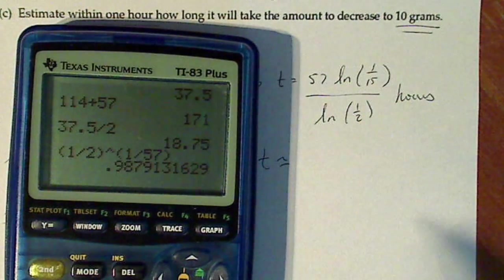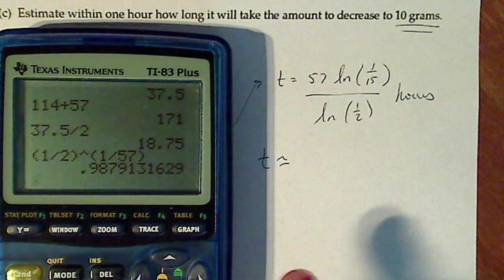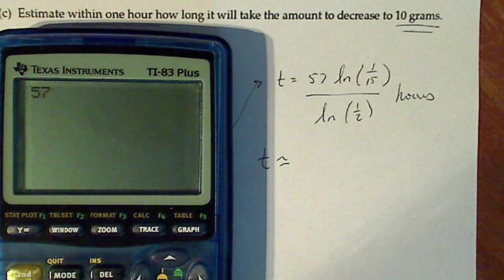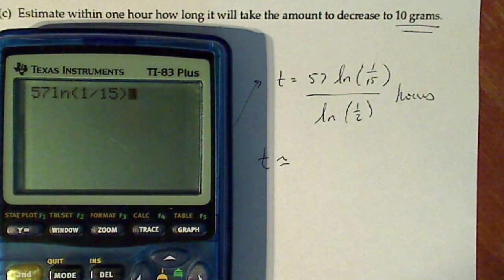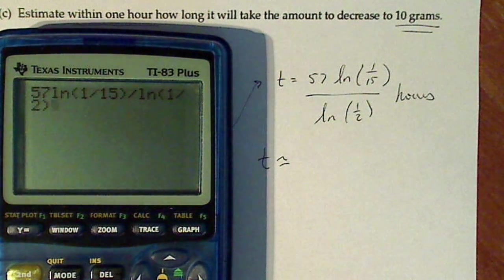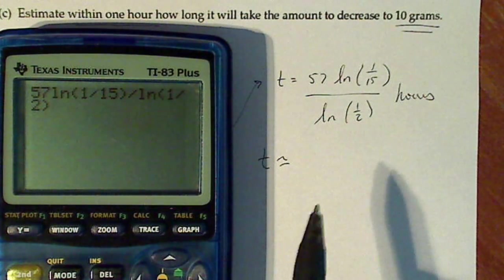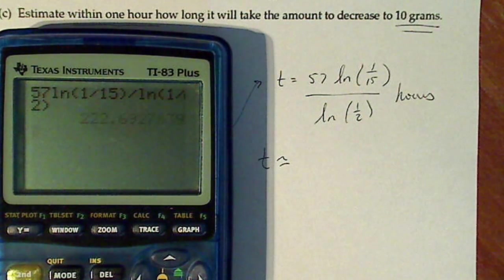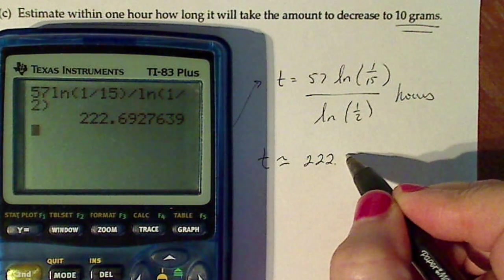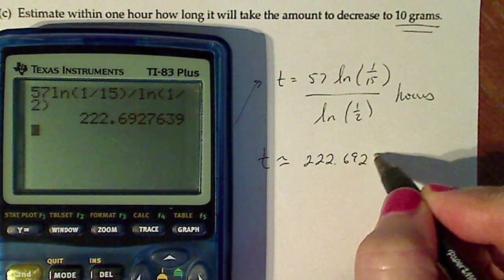Notice I didn't use my calculator until the end. Again, it's a matter of accuracy. Every time you use your calculator and estimate, you're compounding error over and over. So natural log of one over 15, natural log of one-half.